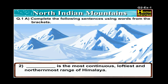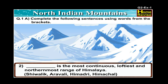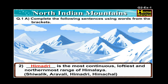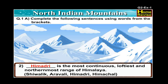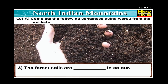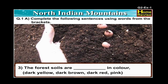Number two: Dash is the most continuous, loftiest and northernmost range of Himalayas. Options are Shivalik, Aravalli, Himadri, Himachal. The correct option is Himadri. Himadri is the most continuous, loftiest and northernmost range of Himalaya.